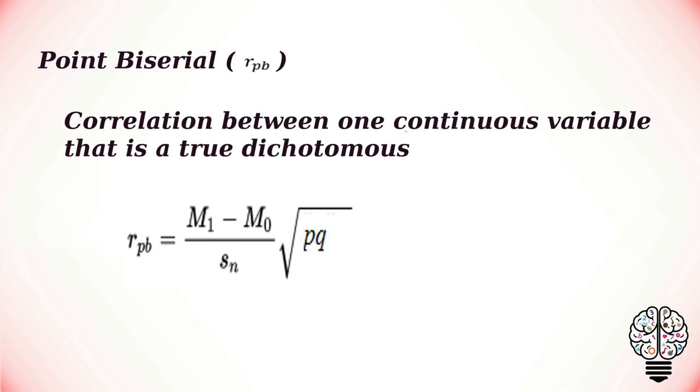Here M₁ is the mean of one group and M₀ is the mean of the other group, and Sn is the standard deviation. P and Q are the proportions of cases in alternate situations.